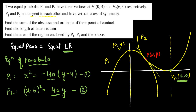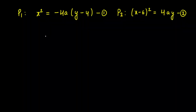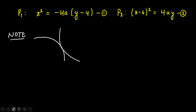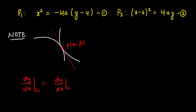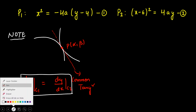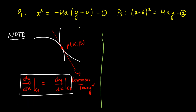Now calculating the condition for a common tangent. As a general note: if two curves are tangent to each other — touching or sharing a common tangent — at a point (α, β), then dy/dx of curve one equals dy/dx of curve two at that point, because the slope of the common tangent must be the same for both curves. We will apply this condition to our two parabolas.